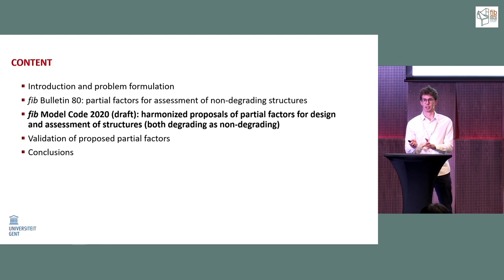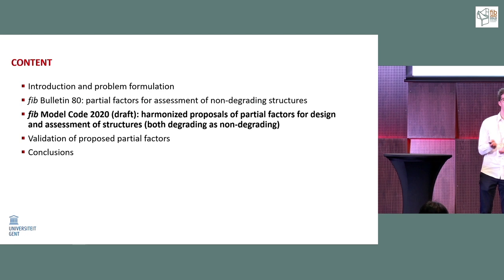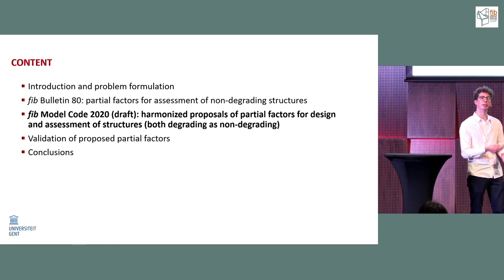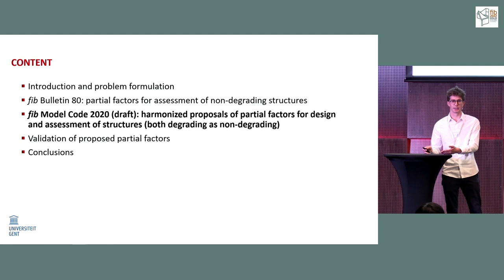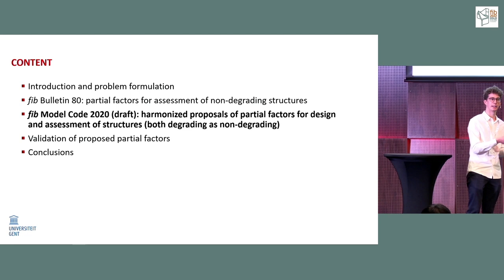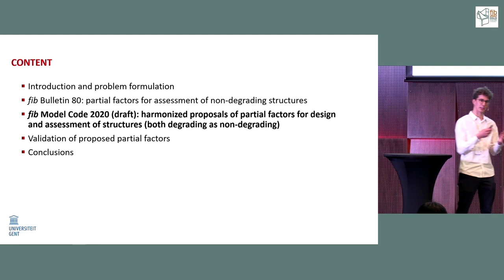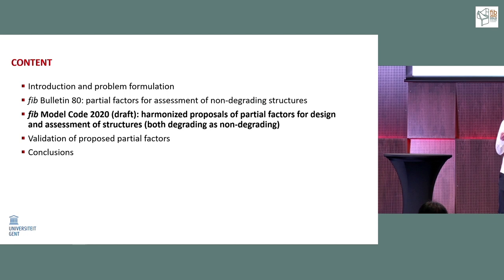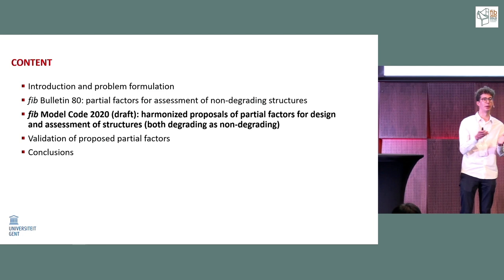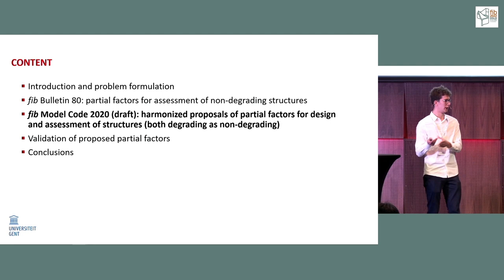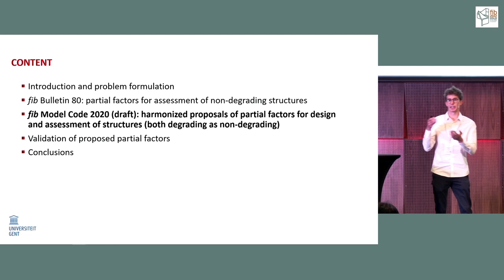To explain what changes for degrading structures, consider a concrete beam with a 50-year lifetime. For a non-degrading structure, we take the most critical variable load over the full 50-year reference period and compare it against a resistance that remains constant in time. This gives a failure probability at the instant of the critical variable load, and since resistance is constant, it doesn't matter when that load occurs.